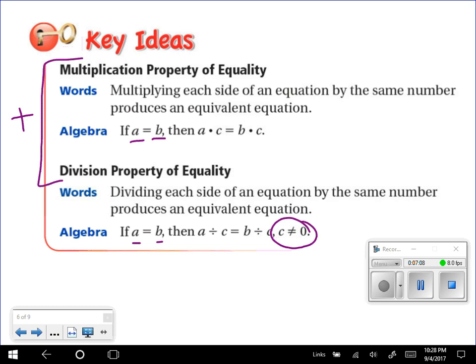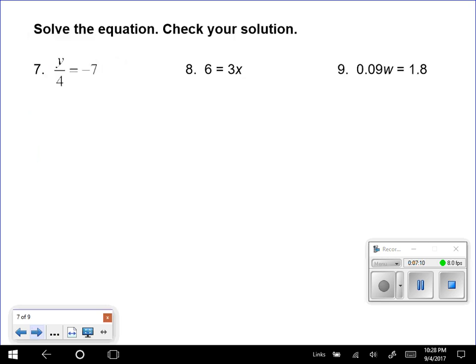So let's try some examples of this. So on 7, remember we're trying to get our variable alone. We have Y divided by 4 because our fraction bar means division.